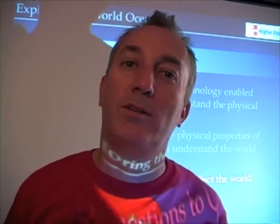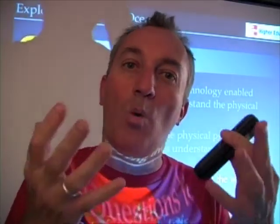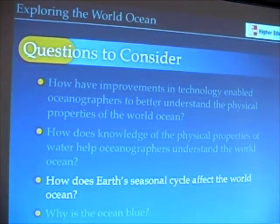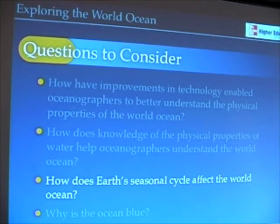This next topic is one of my favorite topics because it helps us understand the cycle of the sun in the ocean, or what we call the seasonal cycle. But more than that, it helps us understand how organisms respond to variations of the sun or solar radiation in the ocean. It's a topic I studied for several years in graduate school and as a postdoc, and a subject I'm still very interested in today. In this particular section, we want to look at how Earth's seasonal cycle affects the world ocean, and specifically, how the seasonal cycle of the sun affects the world ocean.